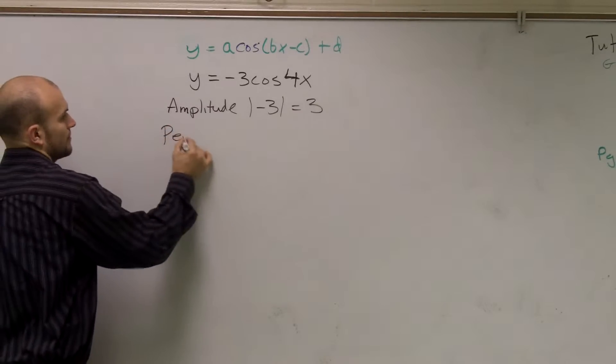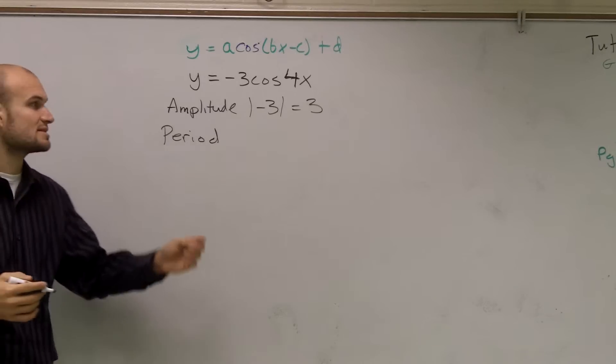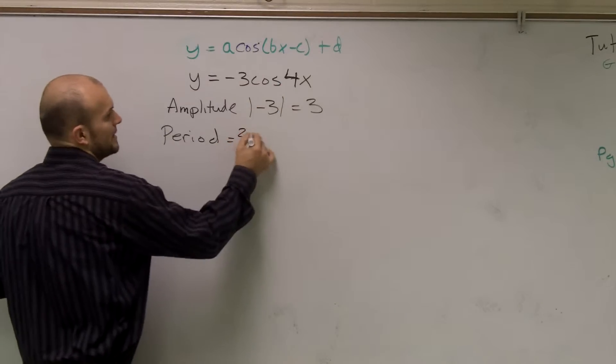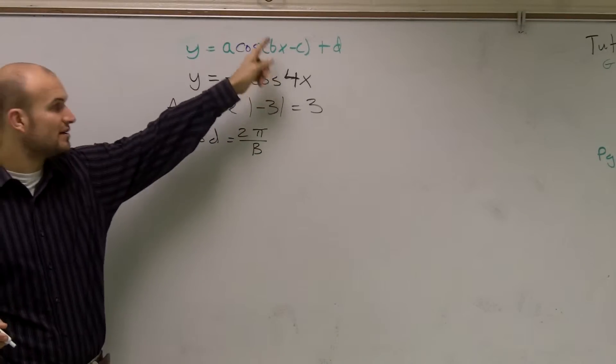Period. Period is going to be how long it takes us to complete one cycle of the cosine graph. So the period is just going to be 2π over b. And if you guys remember, b is your number in front of x.